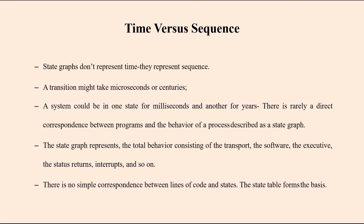State graphs do not represent time — they represent sequence. A transition may take microseconds or centuries; there is no time variation captured. The program behavior and the corresponding behavior of the process can be described in the state graph, which represents the total behavior of the software including executive status, interrupts, and so on. There is no simple correspondence between lines of code and states. The state graph only shows inputs, outputs, and the set of transitions and links. We can represent output sequences, but we cannot represent time in the state machine.